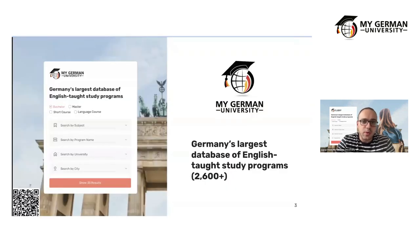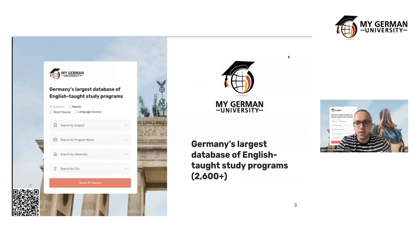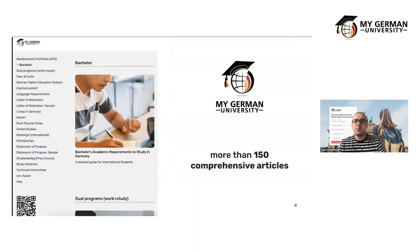Today's webinar is organized by My German University, Germany's largest database of English-taught study programs. We have over 2,600 degree programs at bachelor and master's level, plus short courses and language courses. Our main goal is to assist international students in finding the right program in Germany. One key way we do this is through our study finder, which you can see in demo version on your screens, with filters to help you find programs efficiently according to your preferences.